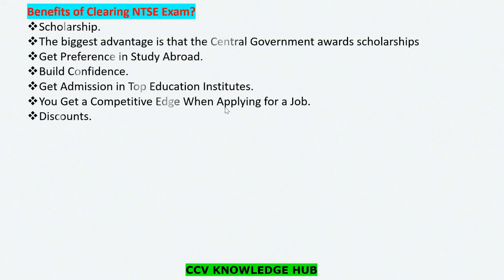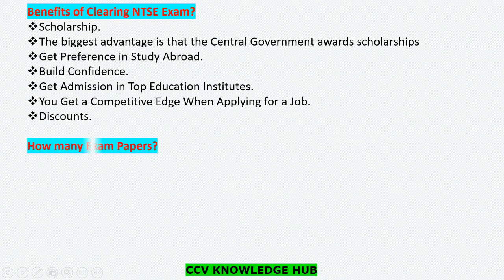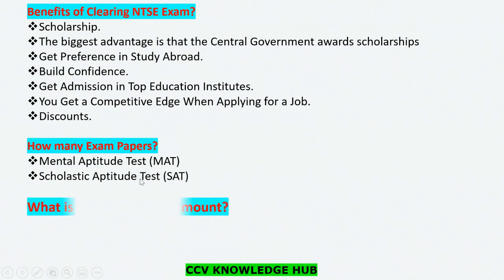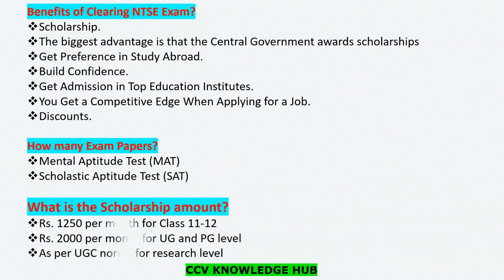You will also get discounts. There are two exam papers: you need to clear the Mental Aptitude Test (MAT) and the Scholastic Aptitude Test (SAT). Regarding scholarship amounts, approximately for 11th and 12th standard it is 1,250 rupees per month.